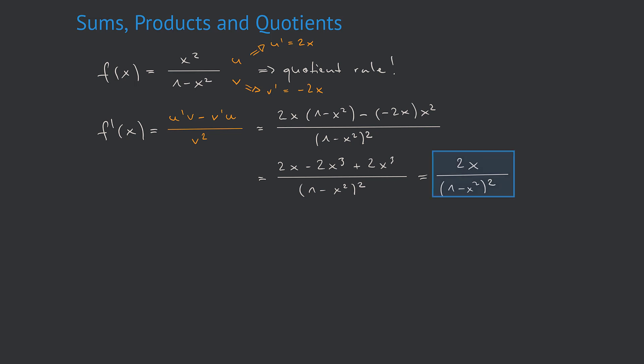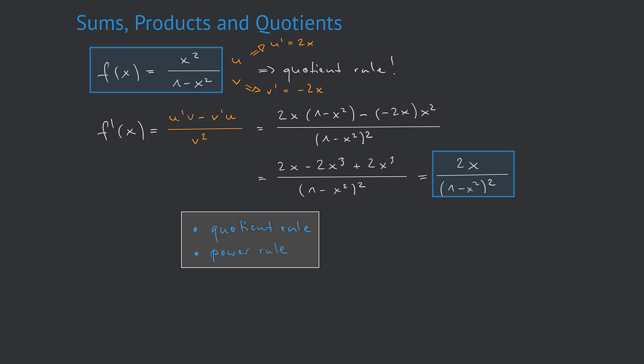It's interesting to realize that for finding the derivative of that rather complex function we have only used the quotient rule and the power rule — no differential quotients or limit calculations at all. These are all hidden behind the rules. Because we have found the rules in a general way, we don't have to bother with limit calculations or differential quotients anymore. Thanks for watching and see you next time.